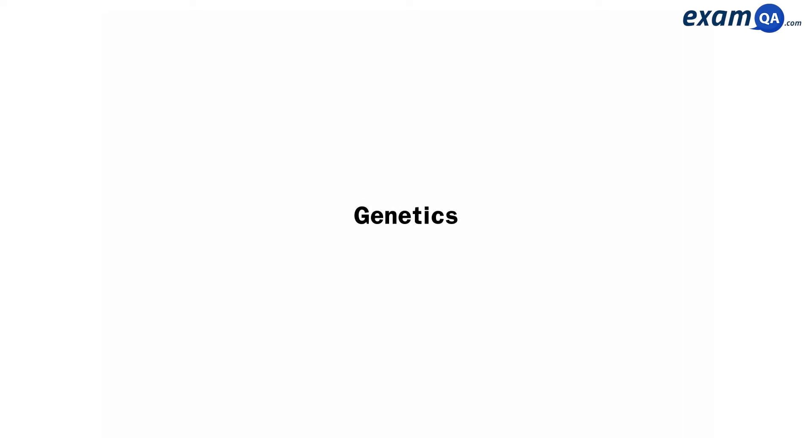Welcome, in this video we're going to be looking at genetics. So let's say we have the gene A, and this codes for hair colour. Capital A is brown hair, and small a is blonde hair.